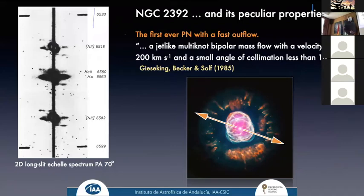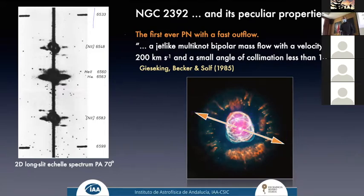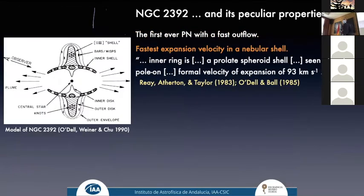Now I move to my focus source: NGC 2392, the Eskimo Nebula. This is very peculiar — it was actually the very first PN with a fast outflow detected. In 1985, GK King and collaborators described a jet-like, multi-node bipolar mass flow with a velocity of nearly 200 km/s. Looking at the long-slit observation, you can see [NII] lines with fast-moving components, an outflow going approximately along one direction. The inner shell is expanding at 90 km/s, which is very unusual — you find such velocities in bipolar PNe but never in the inner shell of a PN.